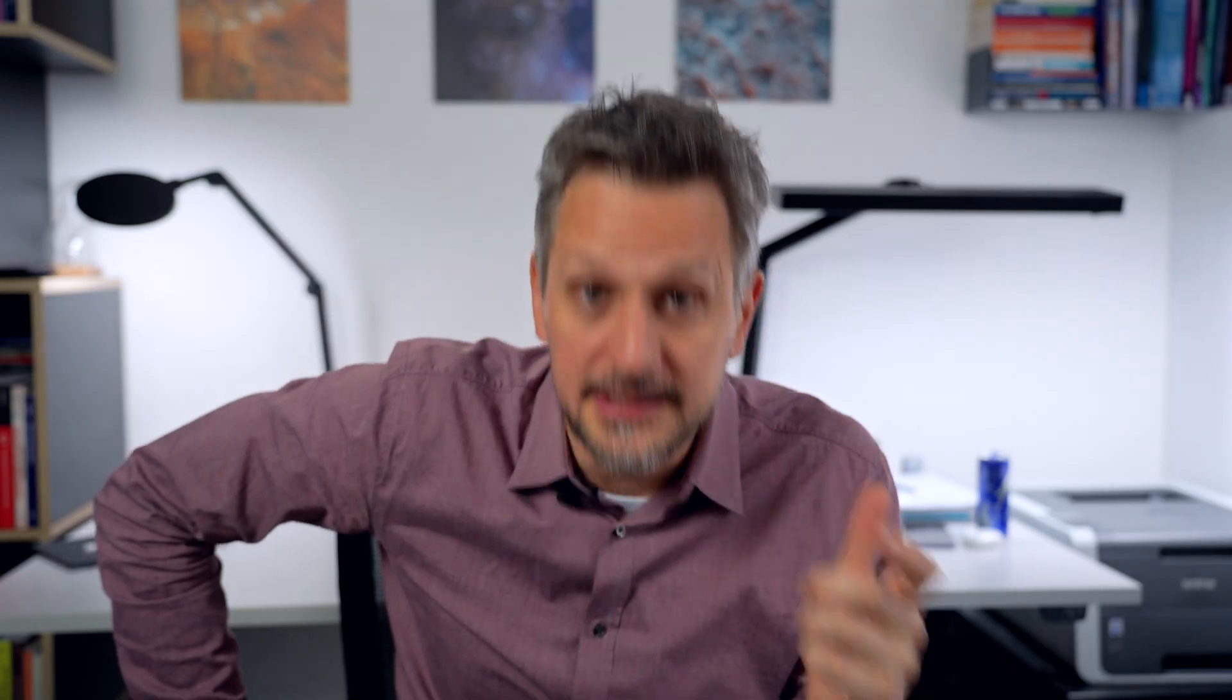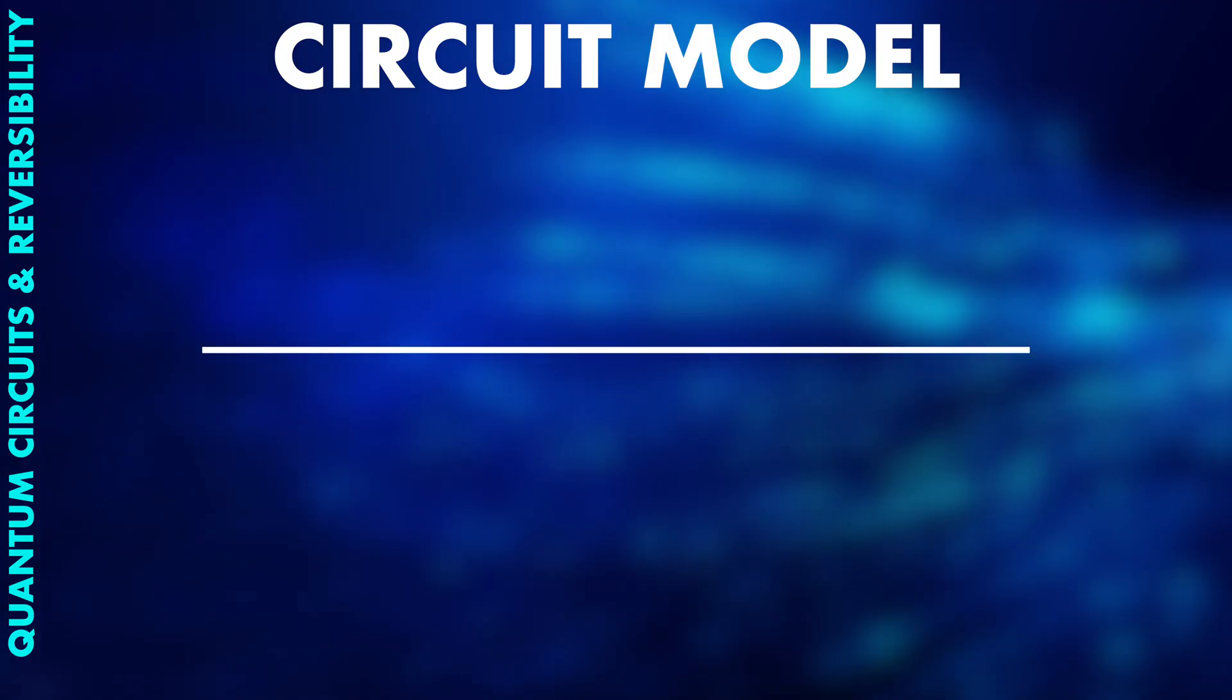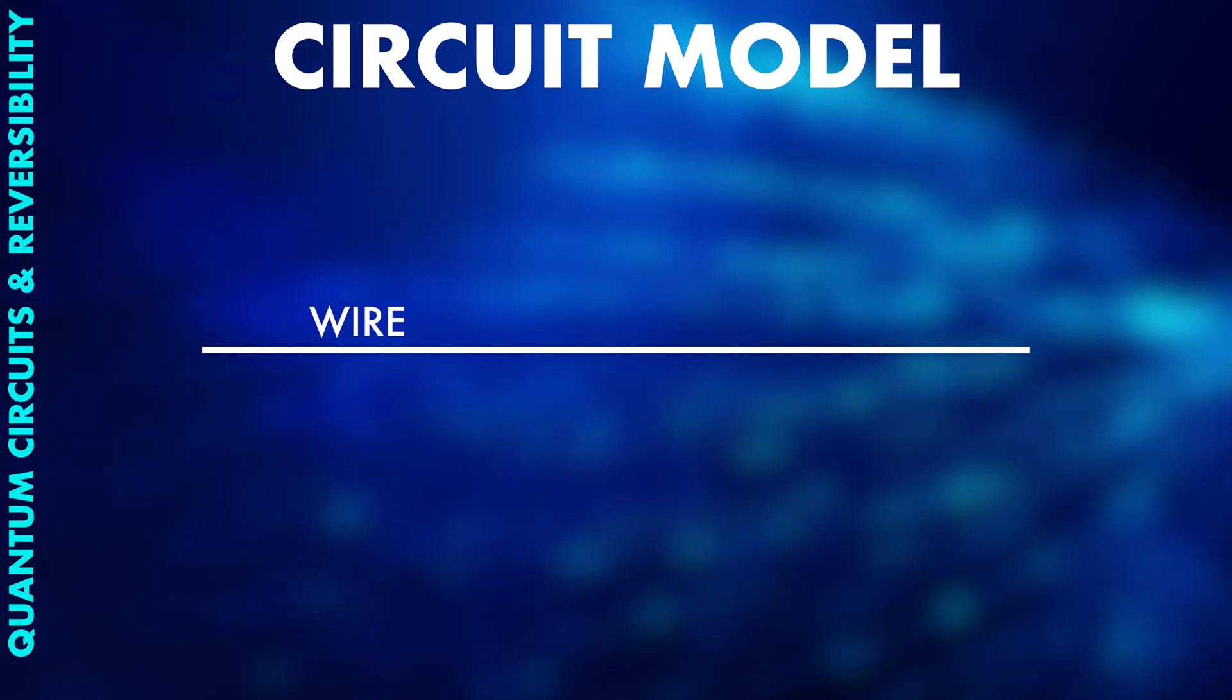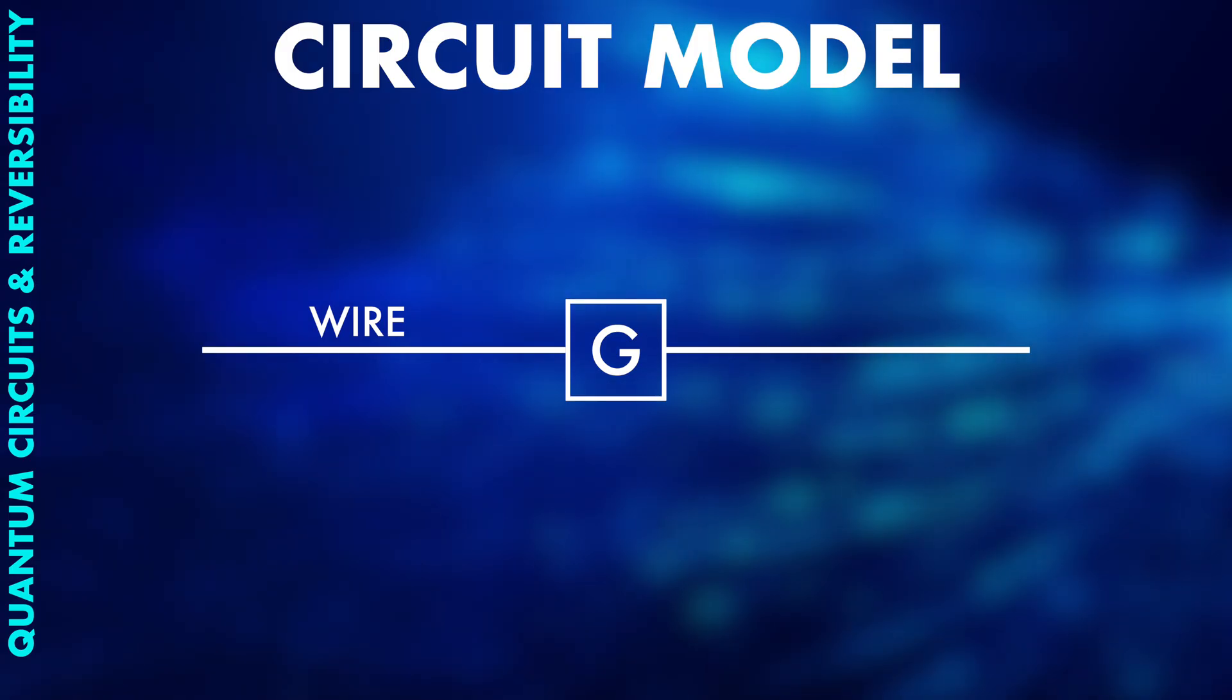In classical computing, we often use the circuit model to display what a computer is doing. A line represents a wire that is carrying a zero or one signal, a bit. And a box like this indicates an operation on this bit, a gate.